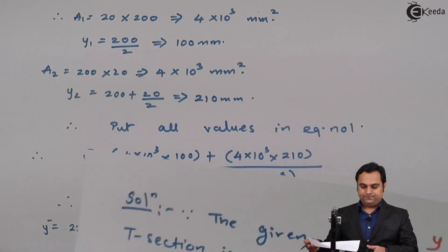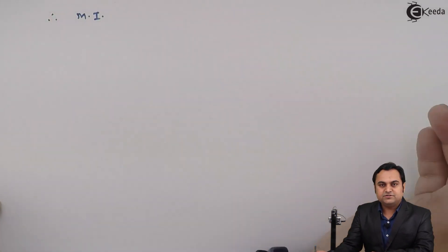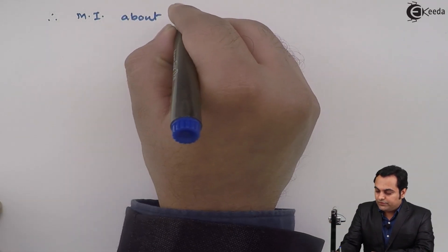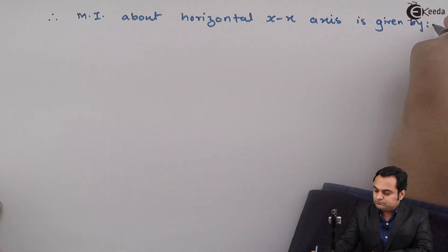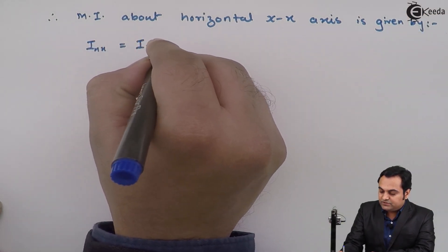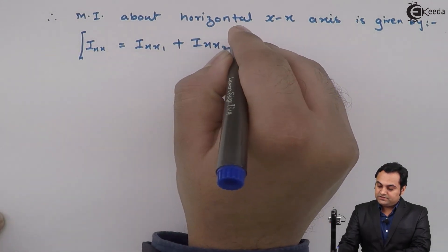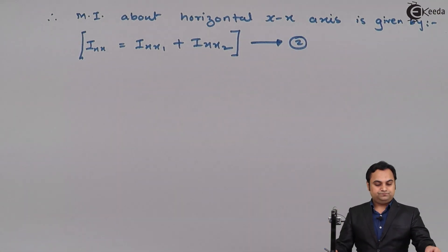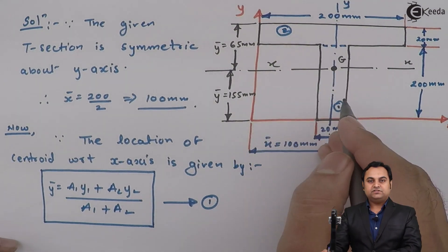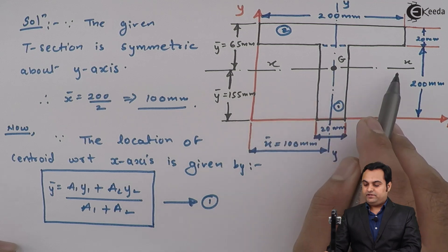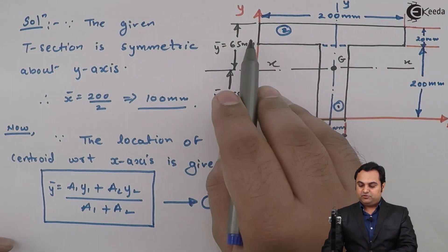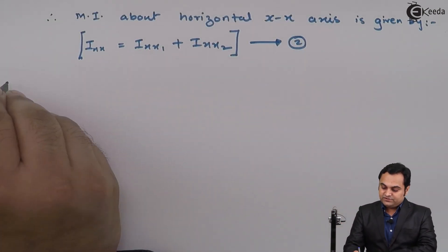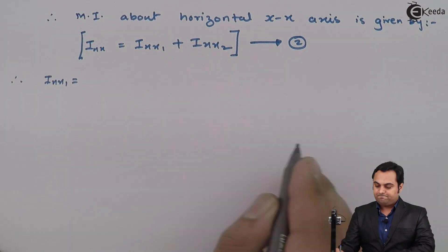Now we can calculate the moment of inertia about the x-axis. The total moment of inertia about the XX axis is Ixx = Ixx1 + Ixx2, where Ixx1 and Ixx2 are the contributions from rectangle 1 and rectangle 2 respectively. This is equation number two.